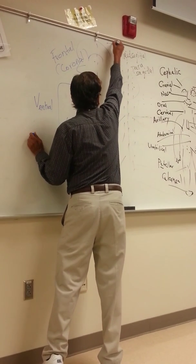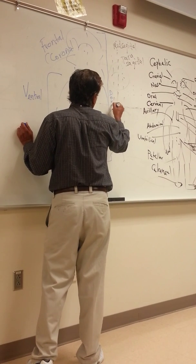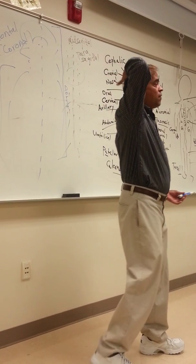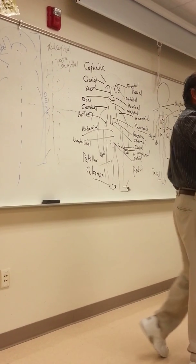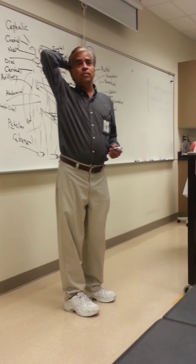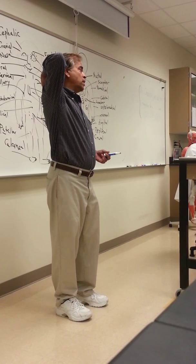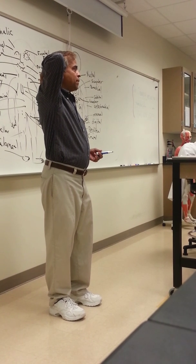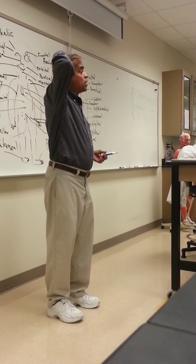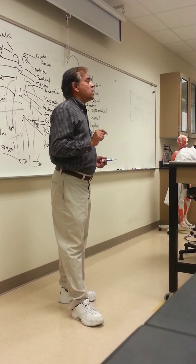On the back, starting from the head all the way down to the hip, we call it the dorsal cavity. Within the dorsal cavity you have two subdivisions: the cranial cavity and the vertebral cavity below it. You need to know what organ is in each cavity. The cranial cavity contains the brain; the vertebral cavity contains the spinal cord.